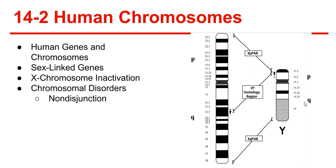Duchenne muscular dystrophy is a sex-linked disorder that results in the progressive weakening and loss of skeletal muscle. X chromosome inactivation: in female cells, one X chromosome is turned off because they have two and only need one. The turned-off chromosome forms a dense region in the nucleus known as the Barr body.